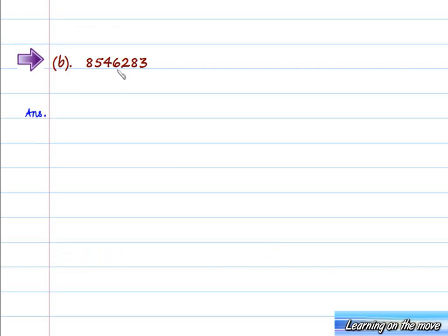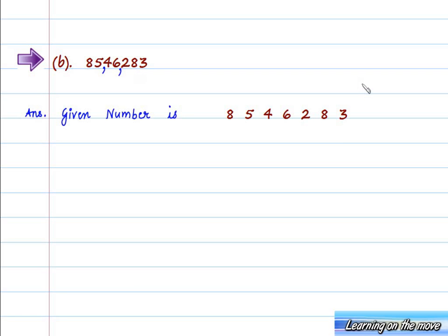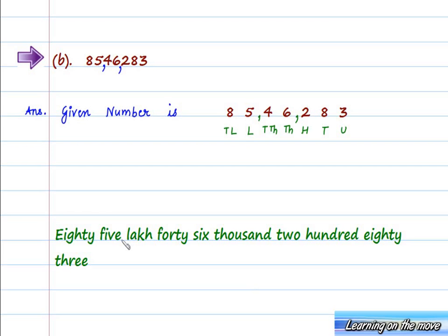Next we have Part B. The given number is 8546283. Putting the commas according to the Indian system: the first comma is after three digits from the right, and the next comma is after a further two digits from the right. The place values are: units, tens, hundreds, thousand, ten thousand, lakh, and ten lakh. We can read this as 85,46,283.